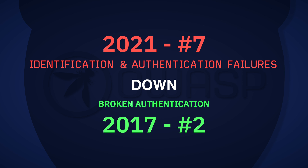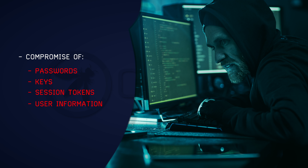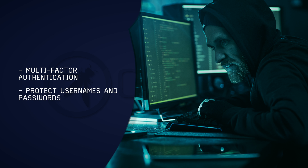A new name given to broken authentication, identification and authentication failures comes in at number 7, down from number 2 — a good sign that standardized frameworks are helping. Broken authentication referred to the compromise of passwords, keys, session tokens, user account information, and other details to assume user identities. The new position shows that procedures like MFA are integral in authenticating key information like usernames and passwords.